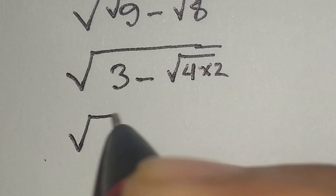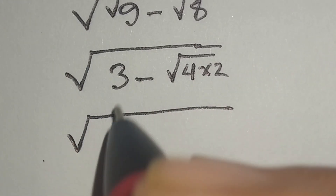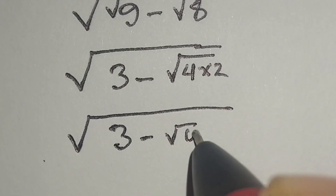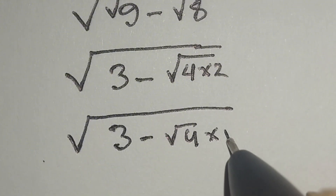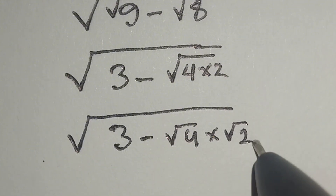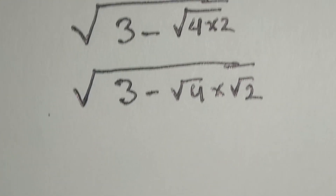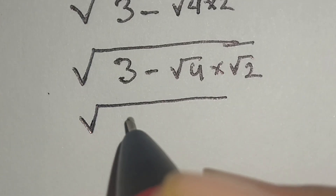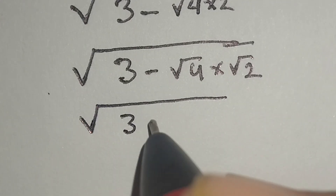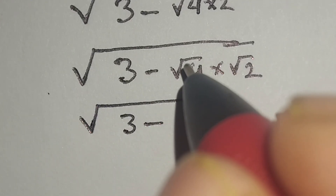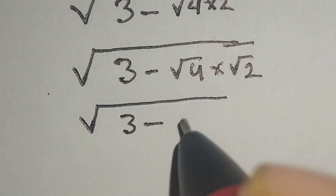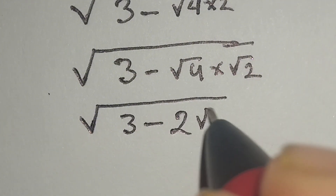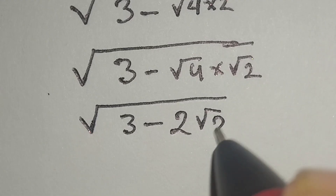So we get square root of 3 minus square root of 4 times square root of 2. Since square root of 4 is equal to 2, this becomes 3 minus 2 times square root of 2.